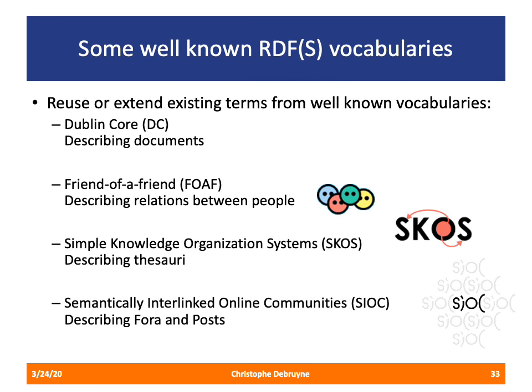Here are some well-known RDFS vocabularies you might encounter. Dublin Core is useful for describing documents in terms of creator, title, creation dates, and spatial and temporal coverage. Friend of a Friend is a popular ontology for describing relationships between people. The Simple Knowledge Organization System (SKOS) is useful for describing thesauri — declaring concepts and their relations such as hyponym, hypernym, and antonym. And SIOC, semantically interlinked online communities, is useful for describing fora, posts, and communication between people on the web.